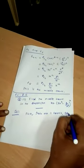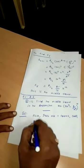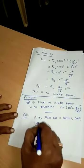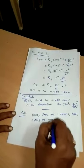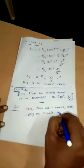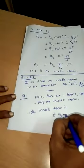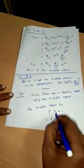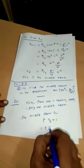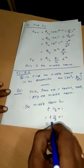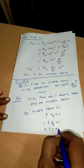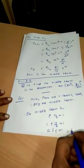Since 11 is odd, there is only one middle term. The middle term is T(n/2 + 1). That is T(10/2 + 1) = T(5+1) = T6. So T6 is the middle term.